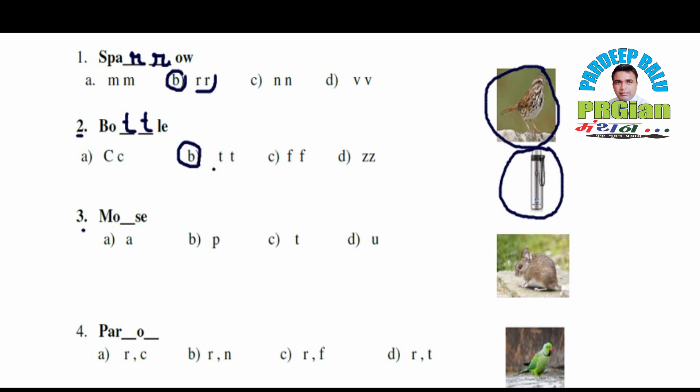Third word is M O _ _ S E. The options here are: A is P, T is U. What will it form? Mouse. What is the spelling of Mouse? M O U S E. So what is the option? D — M O U S E — Mouse.